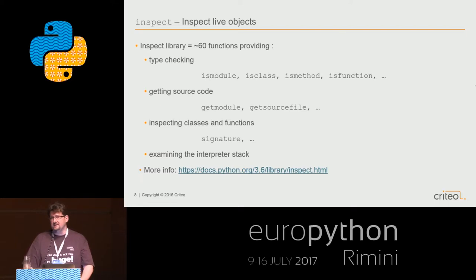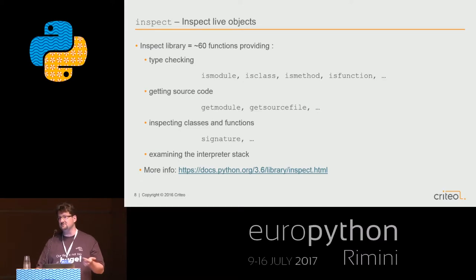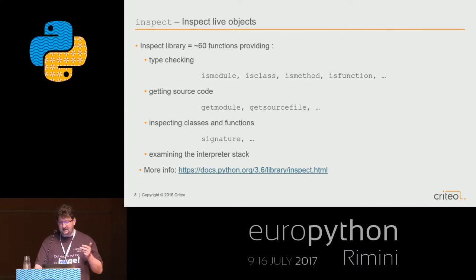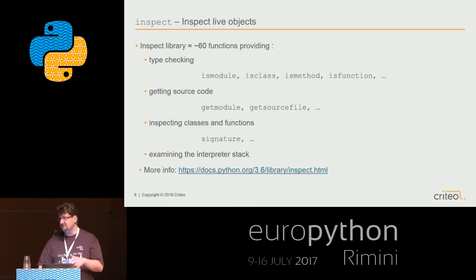The standard library provides even more - a dedicated library called inspect, whose objective is to inspect live objects. It's a pretty big library with around 60 different functions, providing four main services: type checking (is it a module, class, method, etc.?); getting the source code, the module, the source file; inspecting classes and functions (what is the signature, what are the parameters?); and examining the interpreter stack. For that last one, I refer you to Alessandro Molina's presentation from Monday.